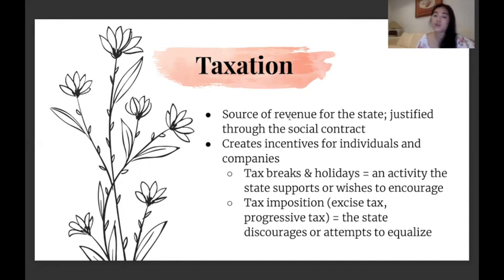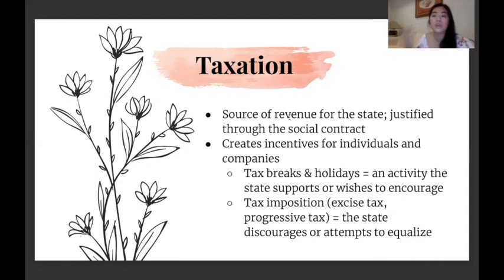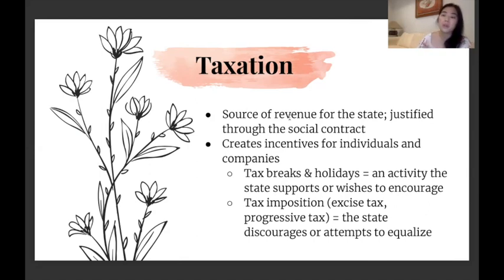A tax imposition, like an excise tax or a progressive tax, discourages or attempts to equalize. An excise tax covers things the state would like to discourage — like the TRAIN law placing taxes on sugar-sweetened beverages, petroleum, automobiles, tobacco, and alcohol — things deemed unhealthy. A progressive tax aims to equalize through graduated rates of taxation: the richer you are, the higher the tax you pay. That's why people below a certain threshold aren't required to pay tax, and those with minimal income pay a smaller percentage, while the extremely rich pay higher.